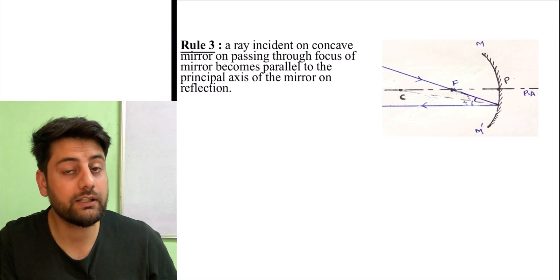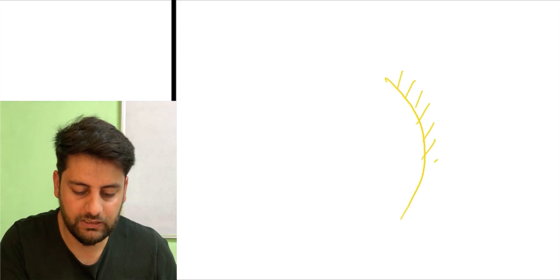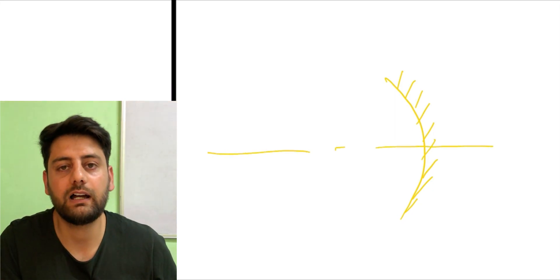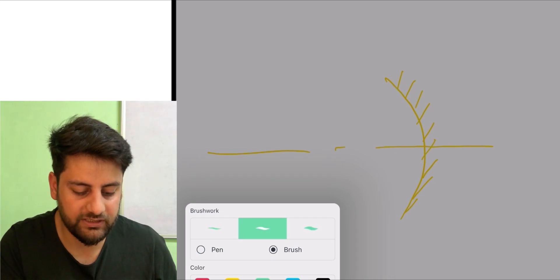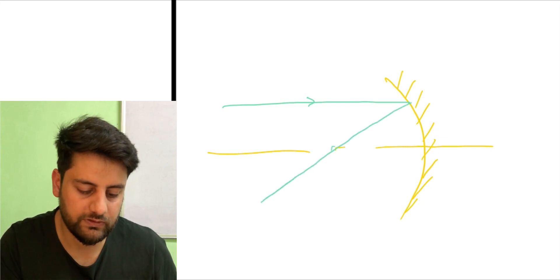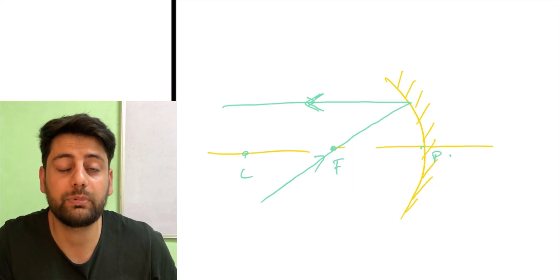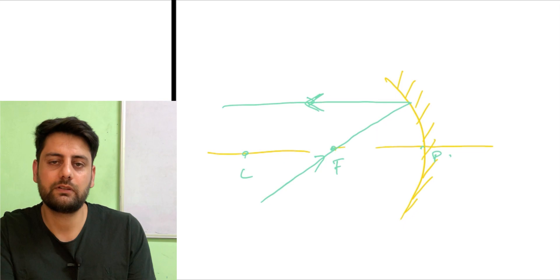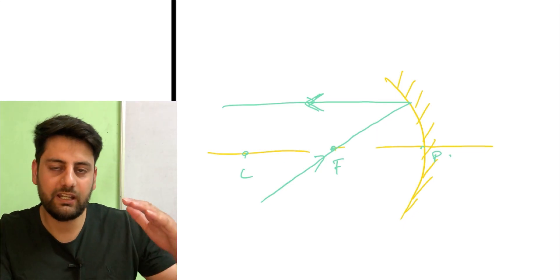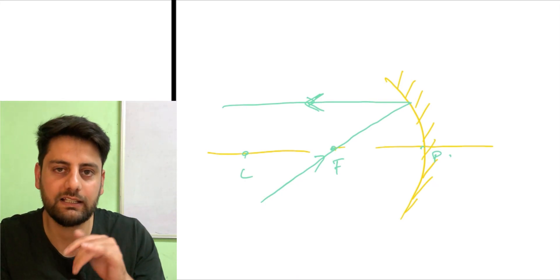The third case is basically the inverse of the first. If a ray is going through the focus, after reflection it goes parallel to the principal axis. Because in the first law, a ray parallel to the principal axis goes through the focus — so if we reverse it, a ray going through the focus after reflection goes parallel to the principal axis. It is exactly a reversal of the first ray diagram.